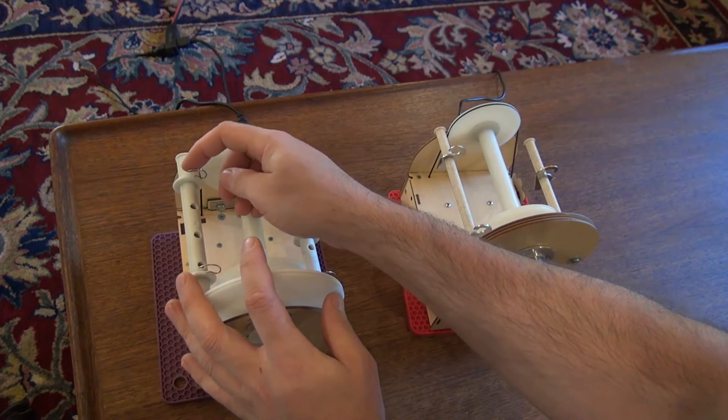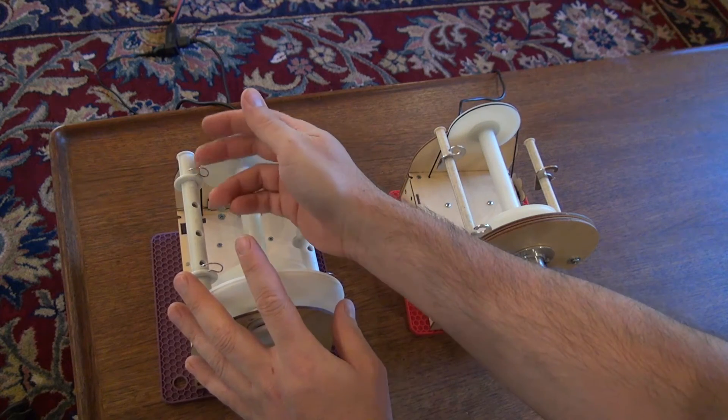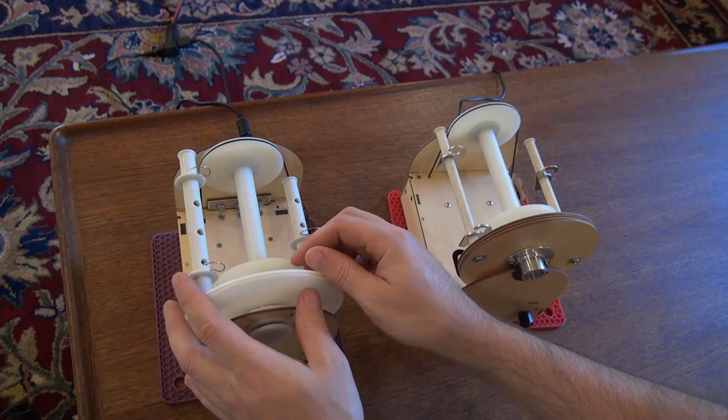Also because the hook is actually a wire, it makes the opening a little bit bigger, which allows bulkier yarn and that's a nice addition.